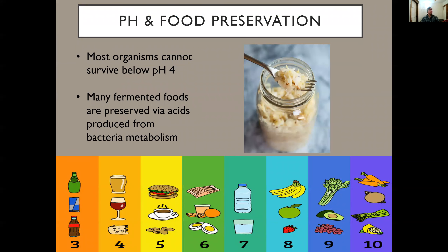Now, what can pH be used for? One obvious application is food preservation. Most organisms cannot survive in a pH below four. Pickled foods have a pH of about 4.6 or lower — kimchi also uses pH to preserve food. Many fermented foods are preserved by acids actually produced from bacterial metabolism.